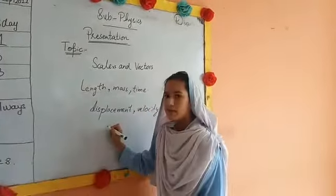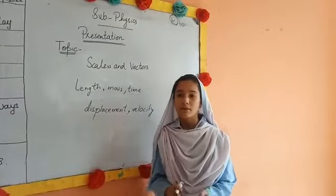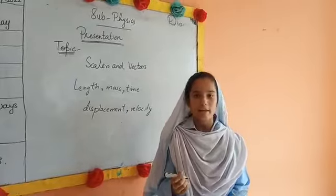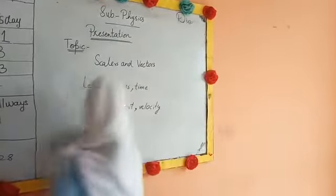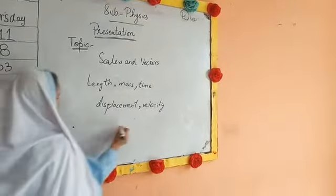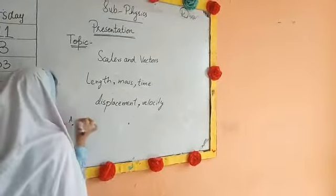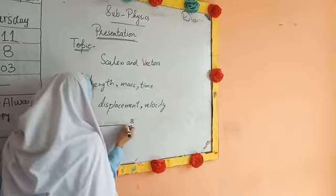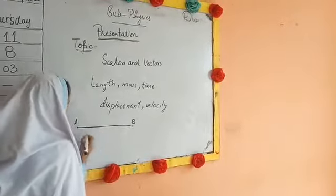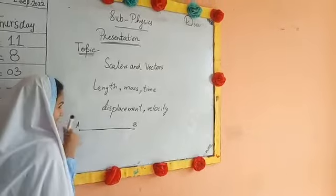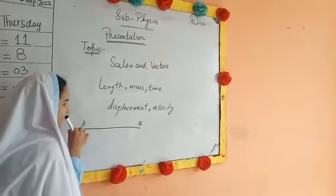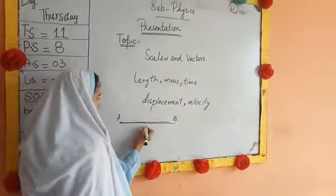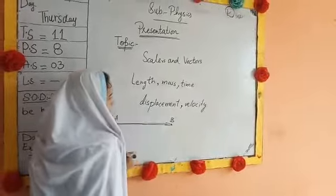Displacement gives us two points of direction. This is a point and this is a point. This is a direction. Displacement gives us the direction. You can move without an end.